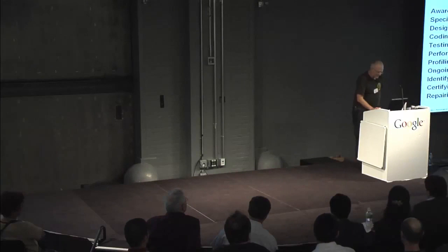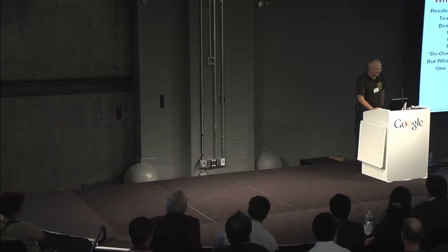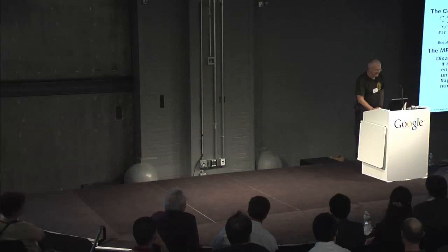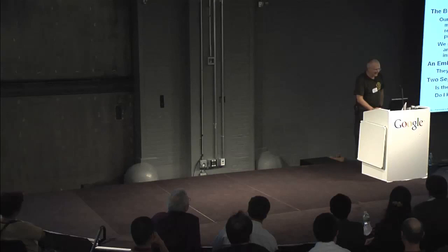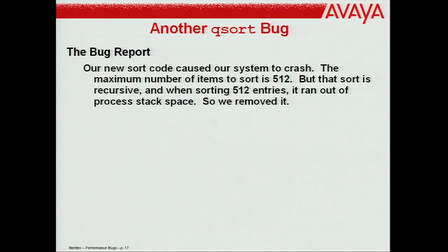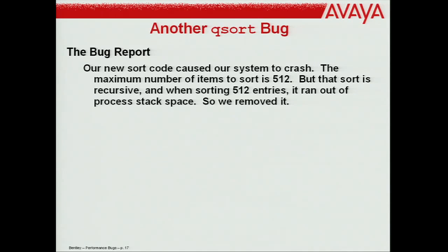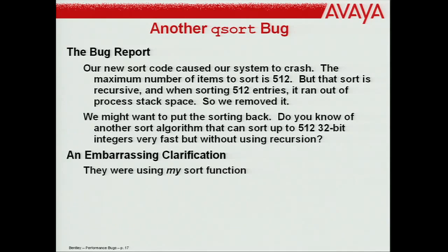A good buddy writes me: 'Our new sort causes the system to crash — maximum item sort is 512. The sort is recursive, and when sorting 512 elements it ran out of process stack space.' So they removed it. They wanted it back — it was handy and made things faster. Do you know of another sort algorithm for up to 512 32-bit integers that's very fast but doesn't use recursion? An embarrassing clarification: it's the sort I wrote. Two separable issues: is the sort really guilty, and do I know another algorithm?